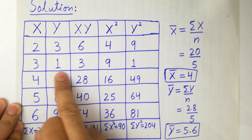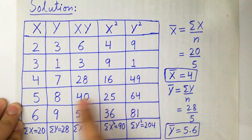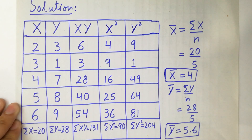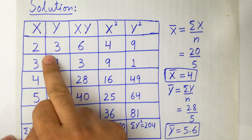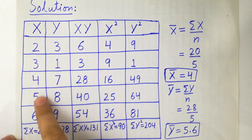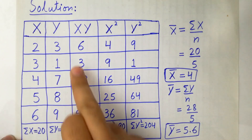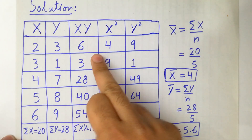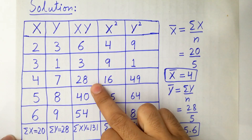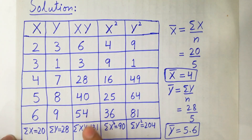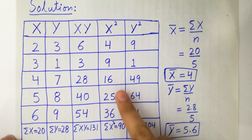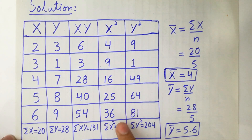Next calculate y²: 3²=9, 1²=1, 7²=49, 8²=64, 9²=81. Now the summations: Σx = 2+3+4+5+6 = 20. Σy = 3+1+7+8+9 = 28. Σxy = 6+3+28+40+54 = 131.